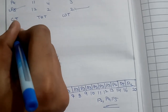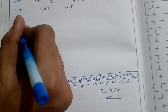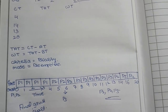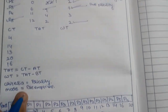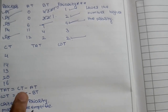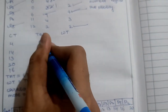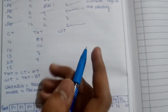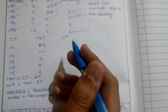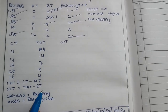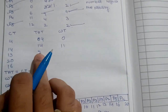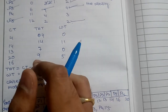Now, completion time, turnaround time, and waiting time calculations. Completion time: P1=4, P2=14, P3=13, P4=20, P5=16. Turnaround time = completion time minus arrival time: P1=4, P2=14-0=14 minus 0... Burst times: P1=4, so waiting time = turnaround minus burst. Values: 4 minus 4 = 0; 14 minus 3 = 11; 7 minus 7 = 0; 9 minus 4 = 5; 4 minus 2 = 2.